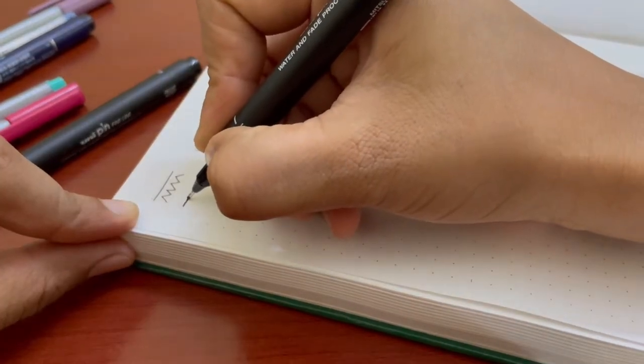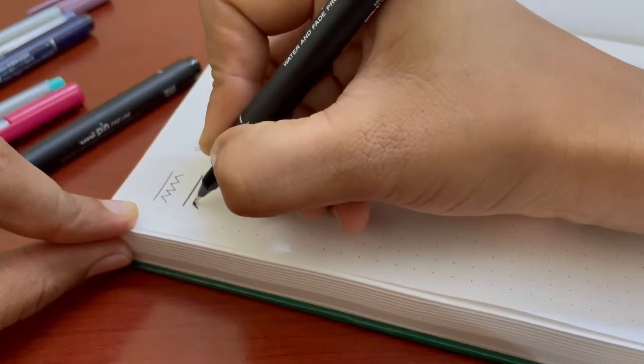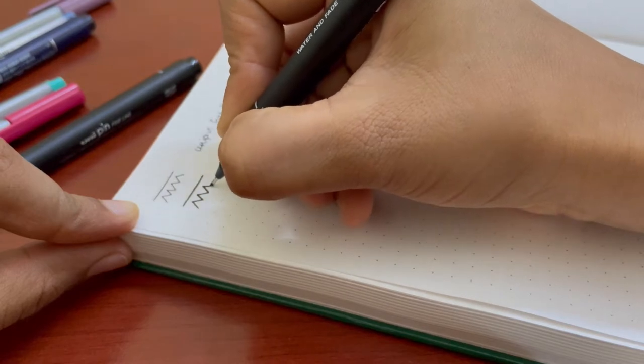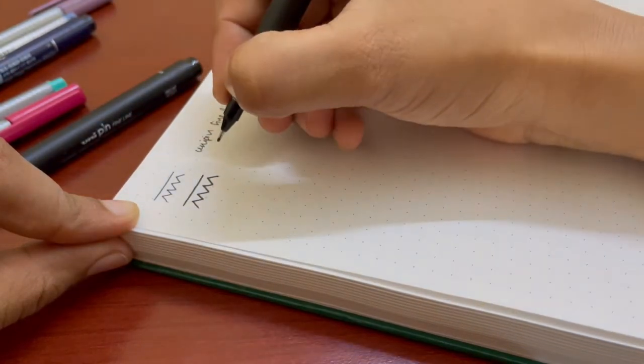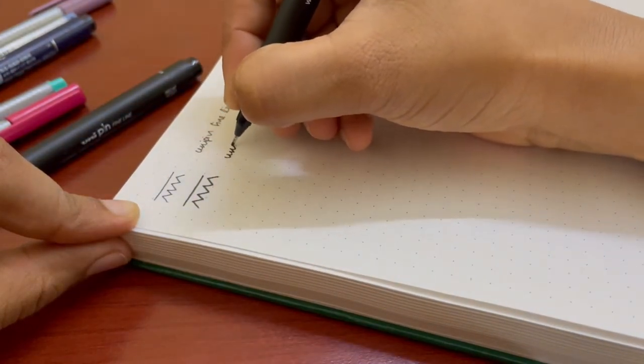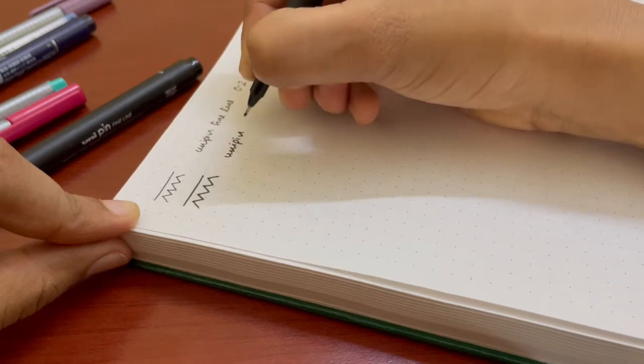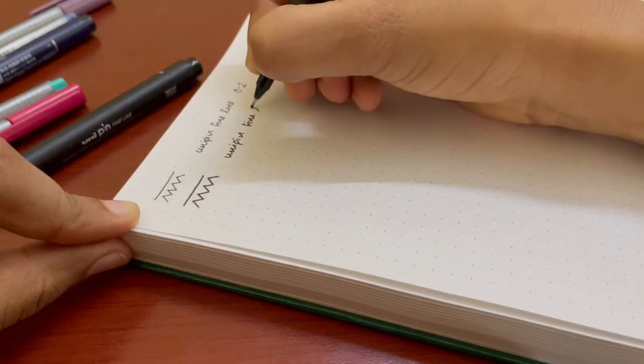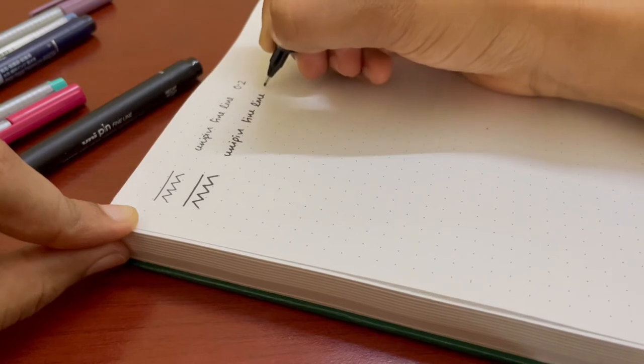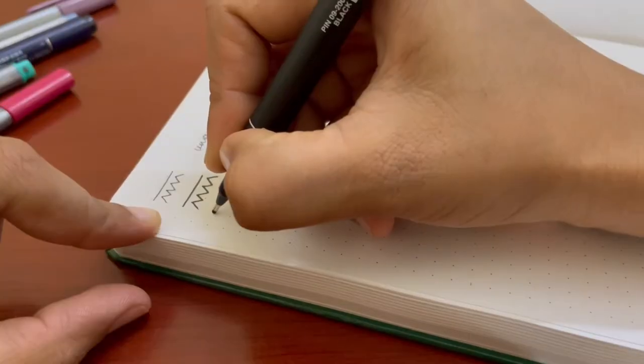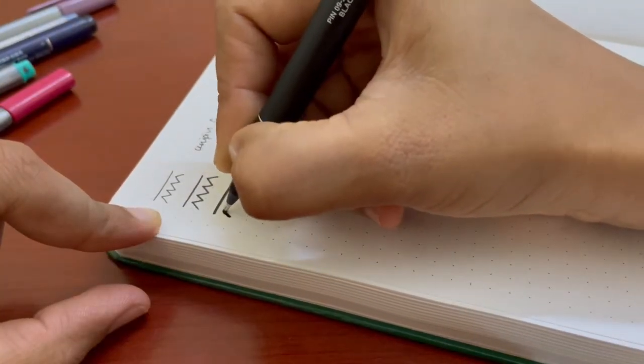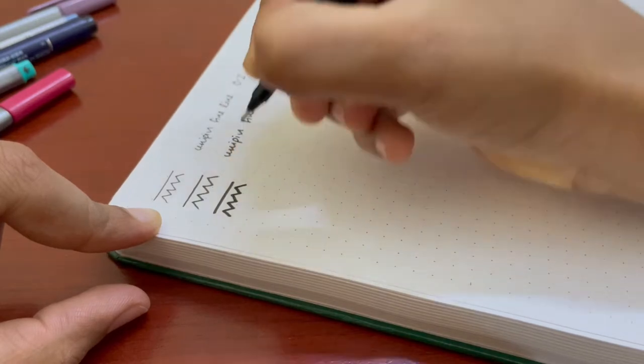So this first one over here was the unique pen fine liner in the size 0.2. The second one is the same pen, but in the size 0.5. This third one is again the same pen, but in the size 0.9.